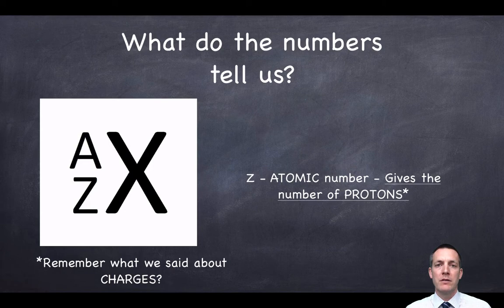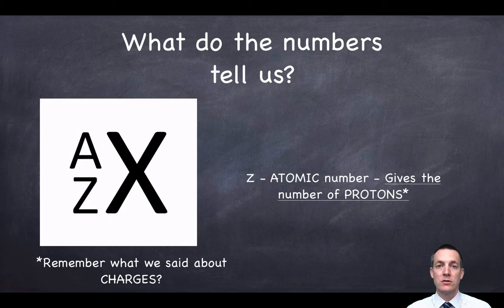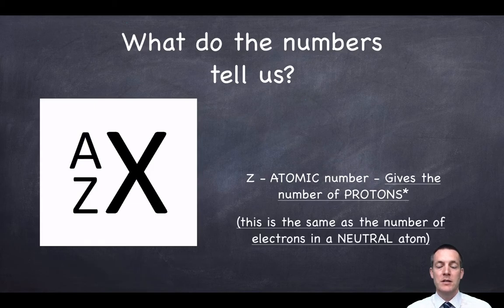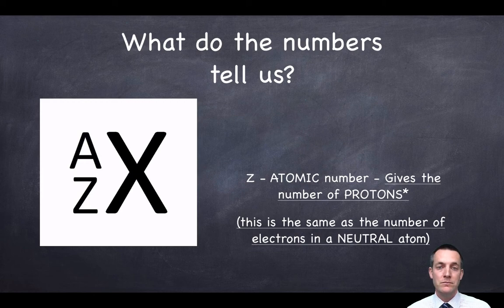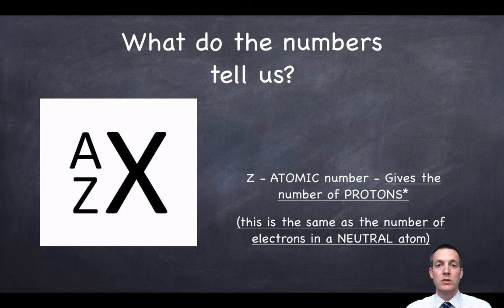We're going to look at what the numbers actually tell us, starting with the atomic number — the one that goes up by one each time. This tells us the number of protons. We saw in the last film that protons have an equal but opposite charge to electrons. So in a neutral atom, the atomic number tells us the number of protons, but it's also the same as the number of electrons, because in a neutral atom the charges have to cancel out. So the atomic number tells us both the number of protons and the number of electrons.